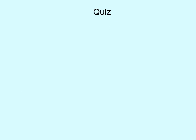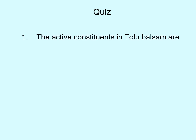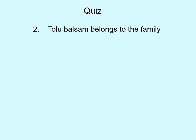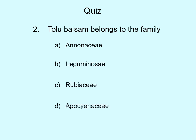Students, under this drug I have given you a quiz. First quiz: the active constituents of Tolu Balsam are — choose from: resins, alkaloids, saponins, or glycosides. The correct answer is resins. Second quiz: Tolu Balsam belongs to which family — Anacardiaceae, Leguminosae, Rubiaceae, or Apocynaceae? The correct family is Leguminosae.